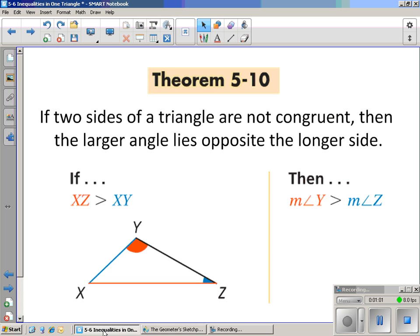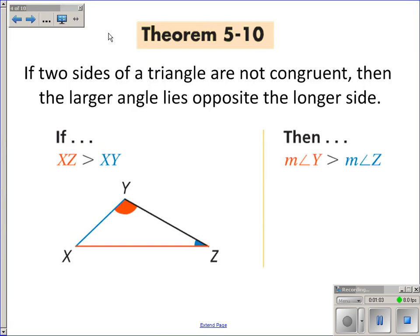So here's theorem 5-10. It says if two sides of a triangle are not congruent, then the larger angle is opposite the longer side.